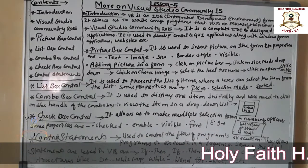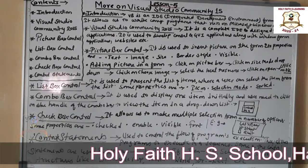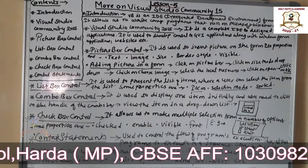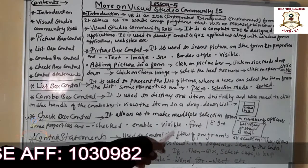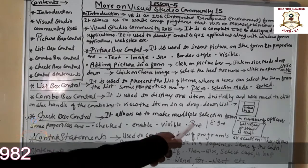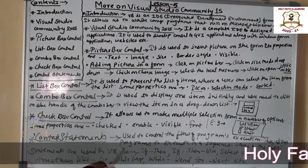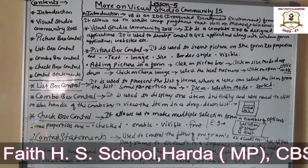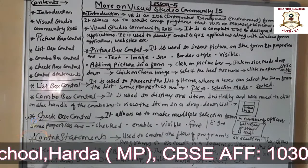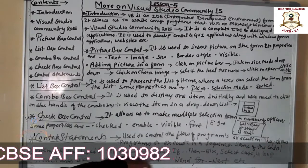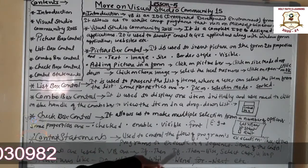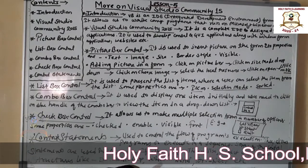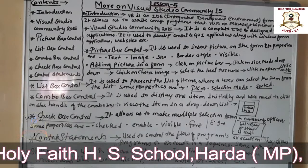Control statements are used to control the flow of a program's execution and allow programs to execute in a sequence. Some control statements used in Visual Basic include: If-Then, If-Then-Else, Select Case, and loop structures such as Do-While loop, While loop, and For-Next loop. We will discuss them one by one.